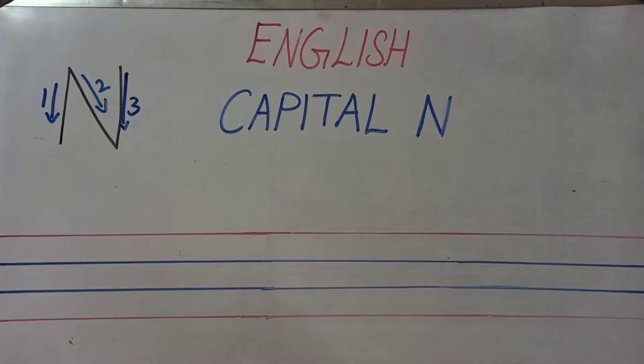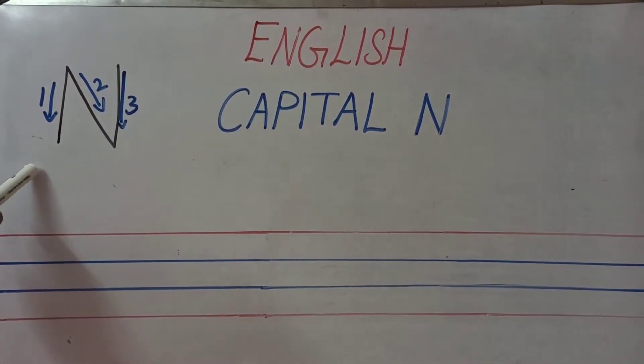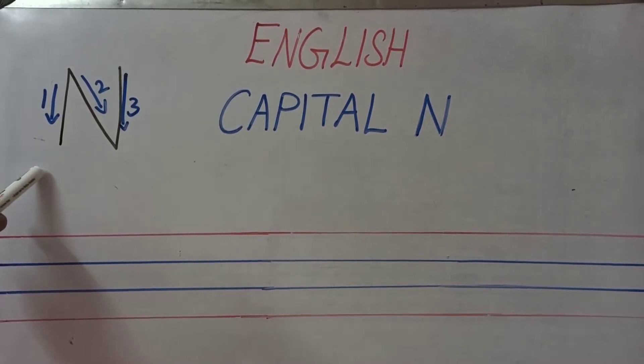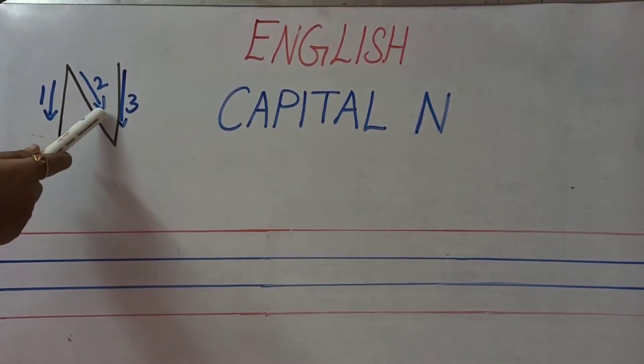Let's see the formation first. In N formation we have 3. Totally we have 3 formations. 1, 2 and 3.